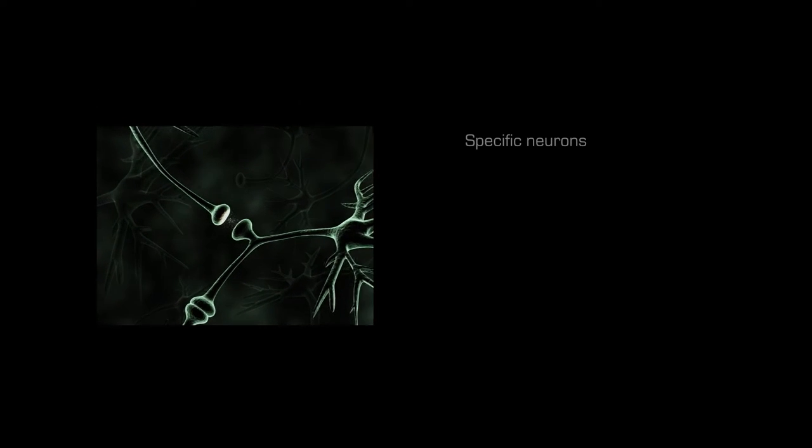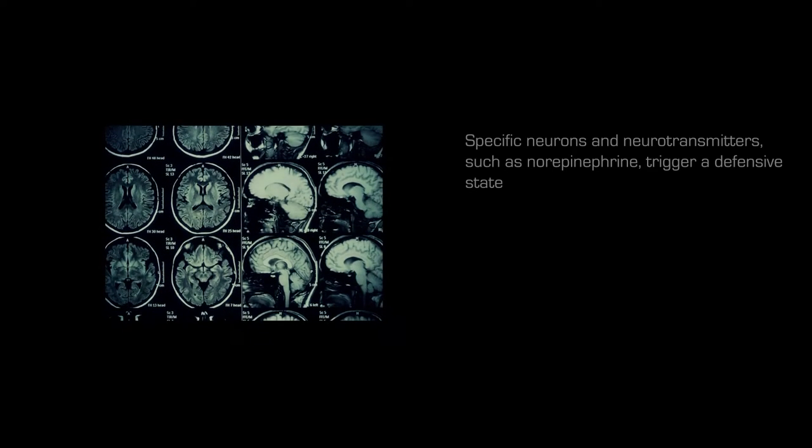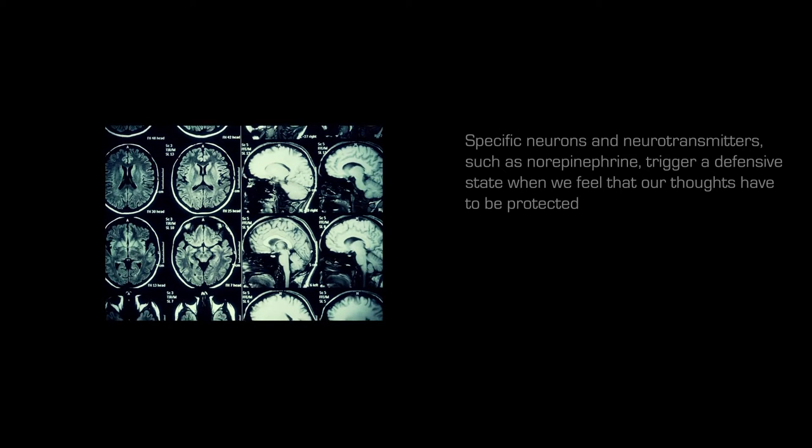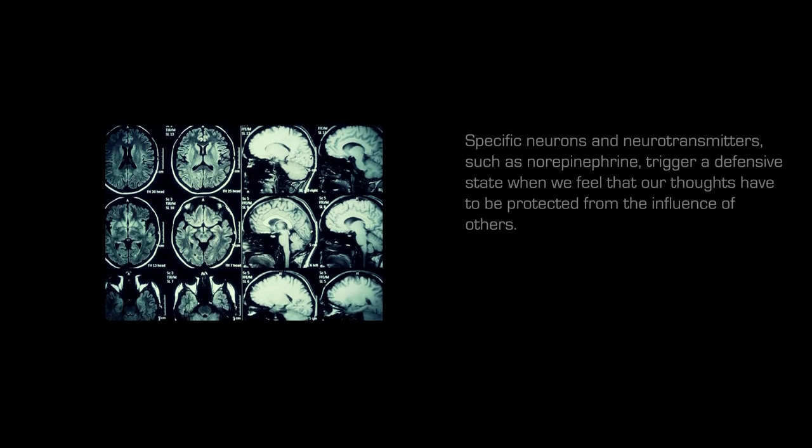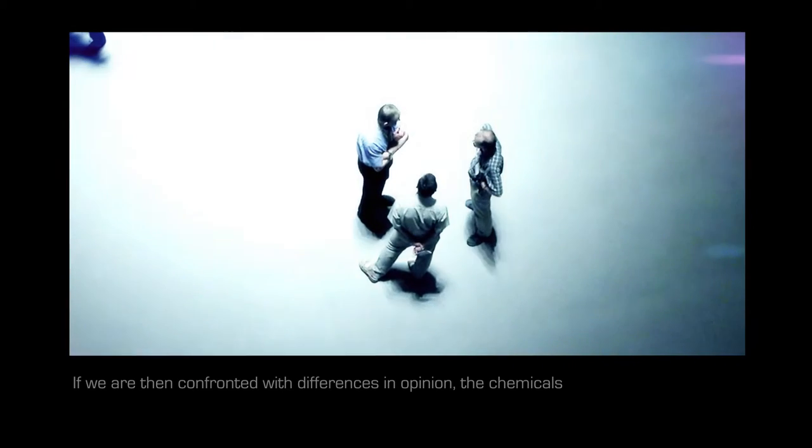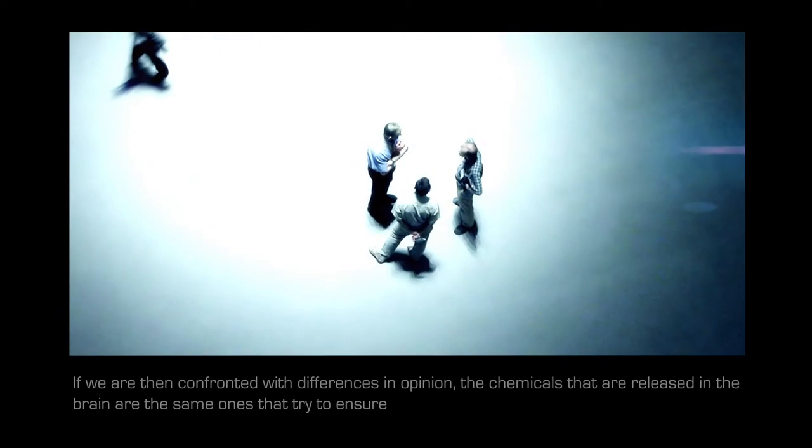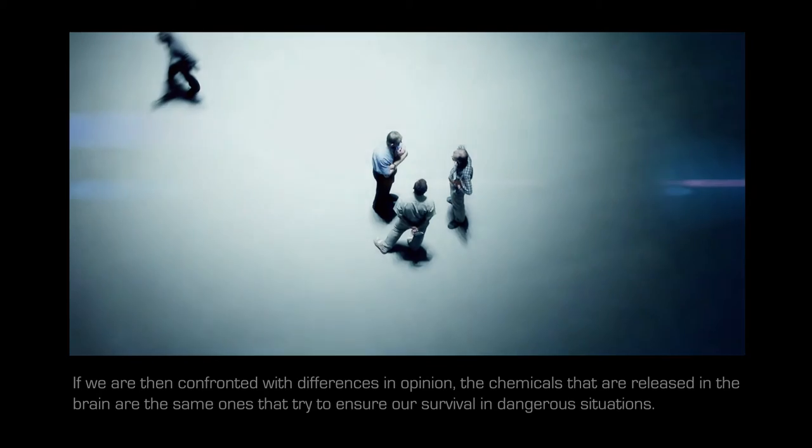Neurotransmitters. Specific neurons and neurotransmitters, such as norepinephrine, trigger a defensive state when we feel that our thoughts have to be protected from the influence of others. If we are then confronted with differences in opinion, the chemicals that are released in the brain are the same ones that try to ensure our survival in dangerous situations.